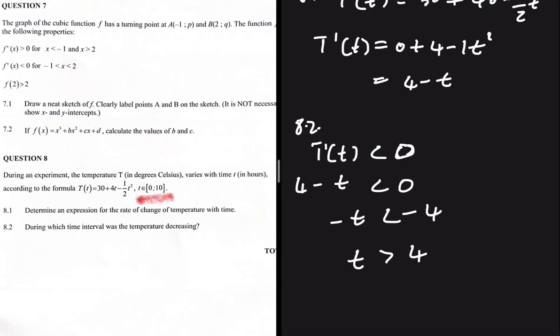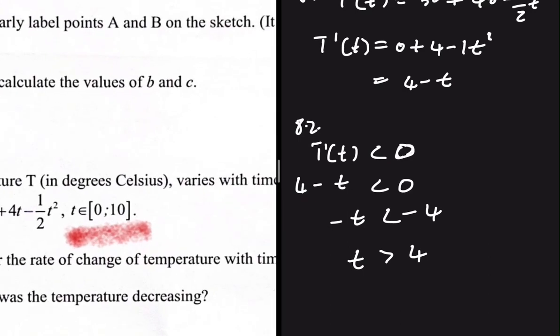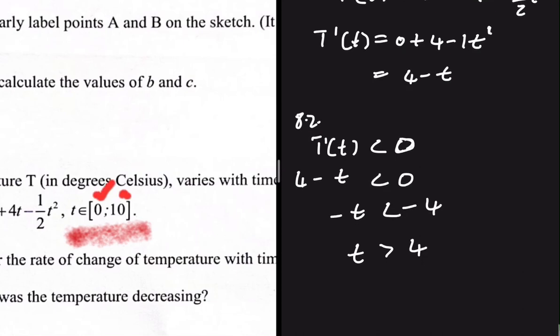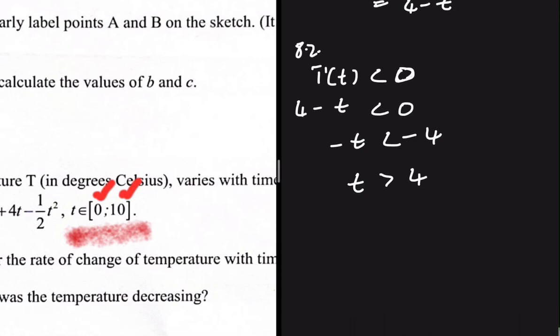But it doesn't end there. We have to look at the restriction we are given. We are told that t should lie between 0 and 10, with 0 and 10 included. So t is indeed greater than 4, but it must not be greater than 10, given the restriction we have. So we can say that t is indeed greater than 4, but it should be less than or equal to 10.